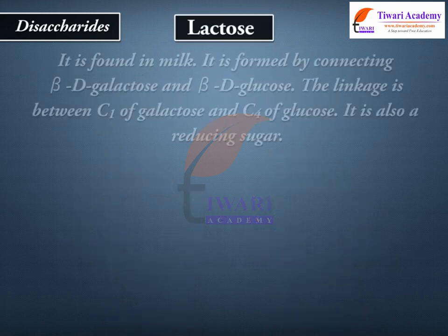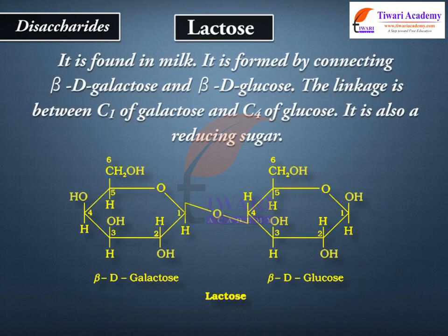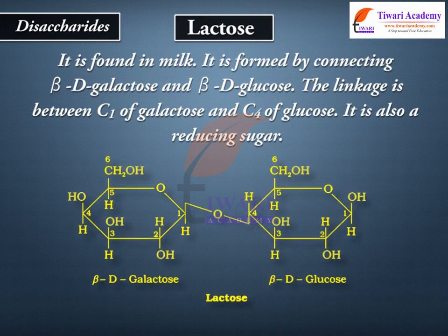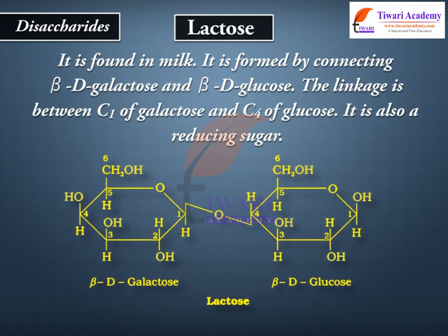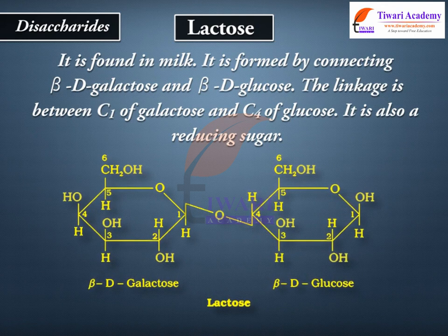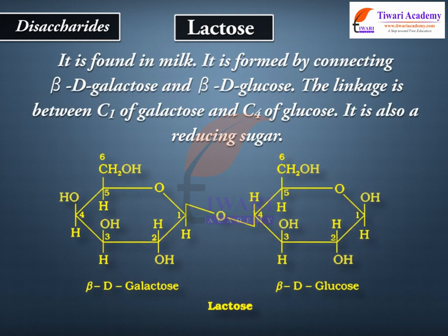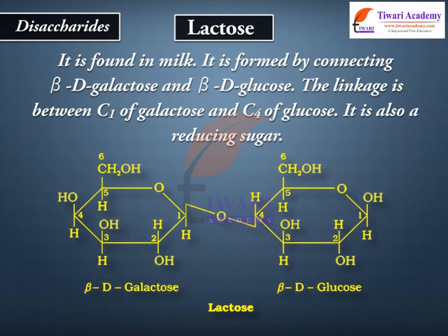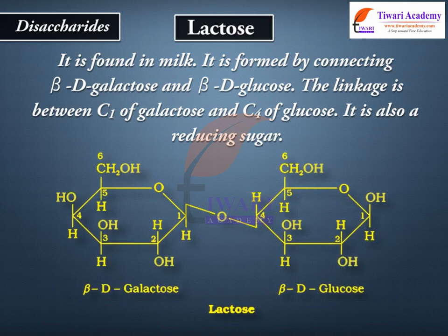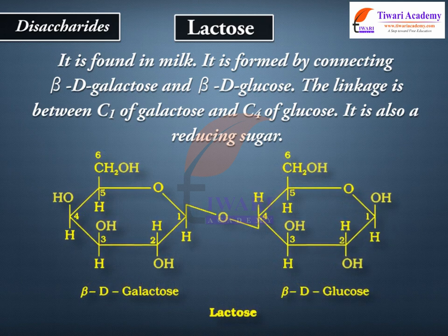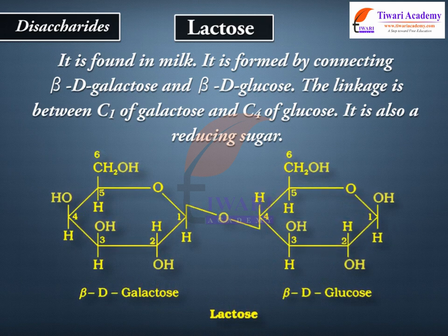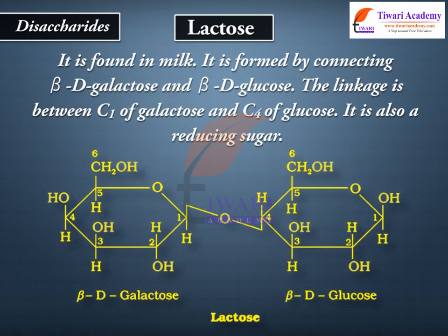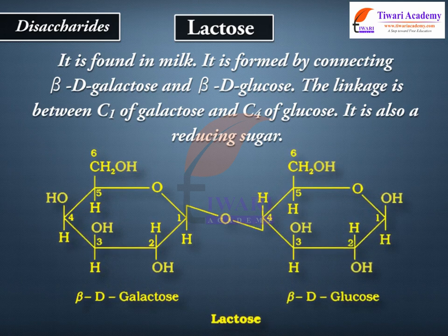Lactose is found in milk. It is formed by connecting beta-D galactose and beta-D glucose. The linkage is between C1 of galactose and C4 of glucose. It is also a reducing sugar.